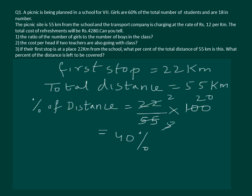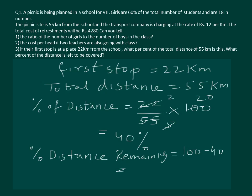To calculate the remaining distance in terms of percentage: percentage of distance remaining equals 100 minus 40, which is equal to 60%. Therefore, the percent of distance left to be travelled is 60%.